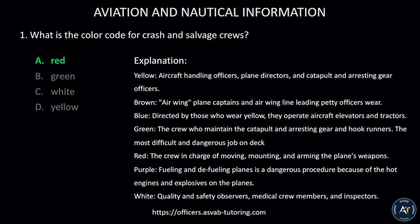Yellow is for aircraft handling officers, plane directors, and catapult and arresting gear officers. Brown is for air wing plane captains and air wing line leading petty officers. Blue is directed by those who wear yellow — they operate aircraft elevators and tractors. Green is for the crew who maintain the catapult and arresting gear and hook runners, the most difficult and dangerous job on deck. Red is the crew in charge of moving, mounting, and arming the plane's weapons. Purple is for fueling and defueling planes, a dangerous procedure because of hot engines and explosives. White is for quality and safety observers, medical crew members, and inspectors.